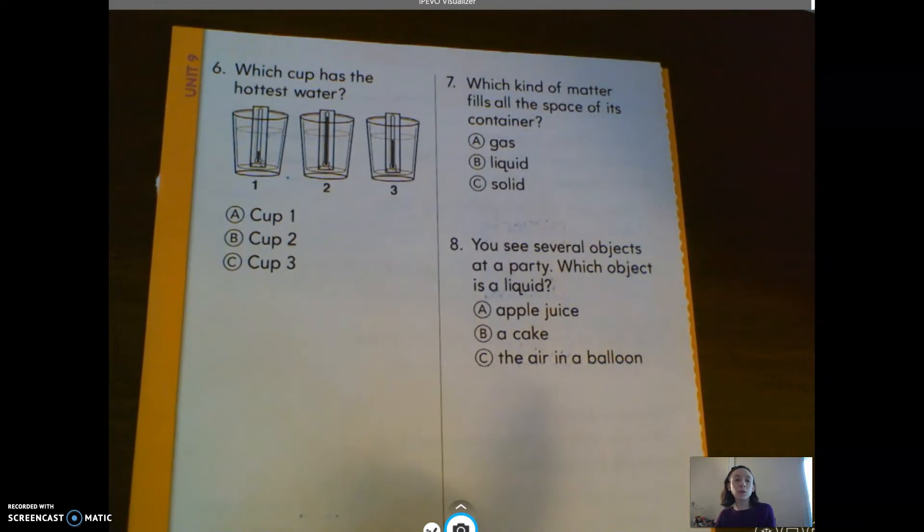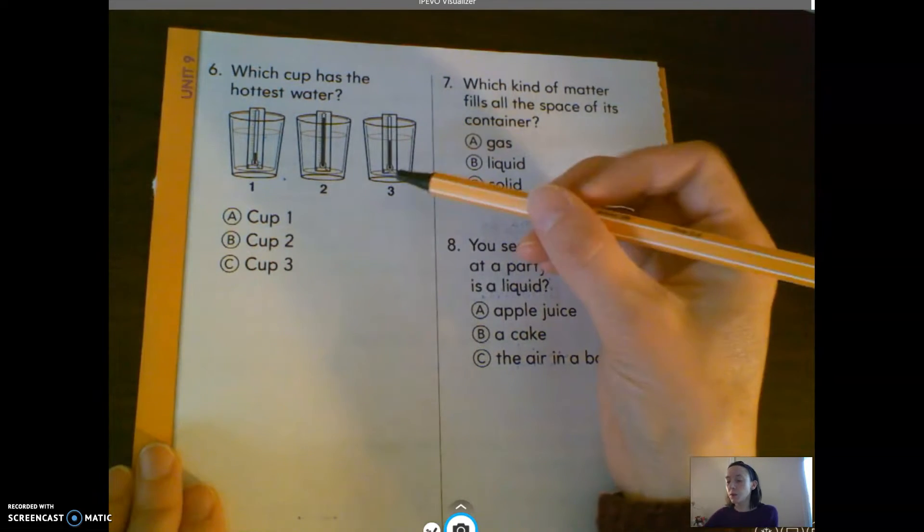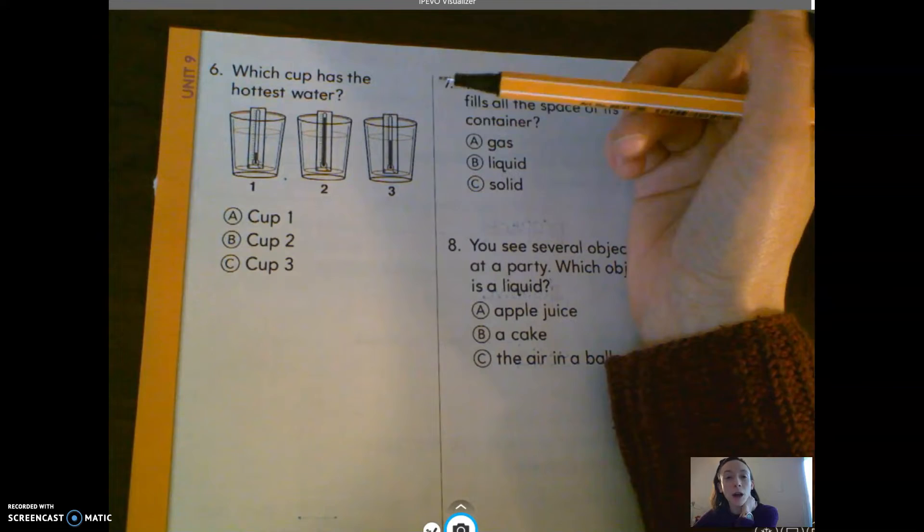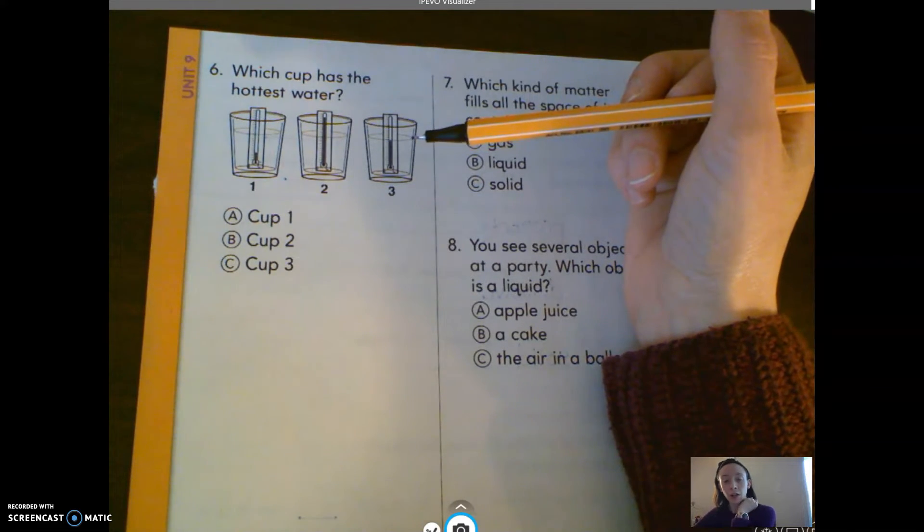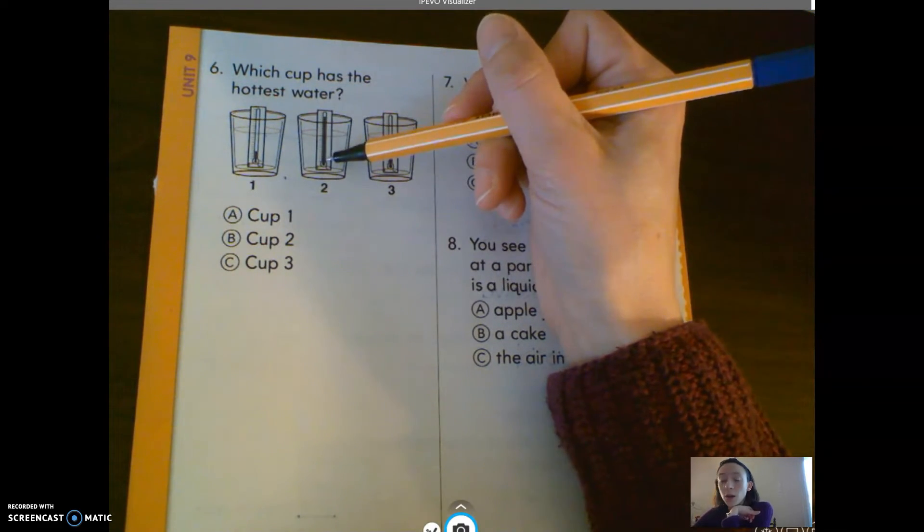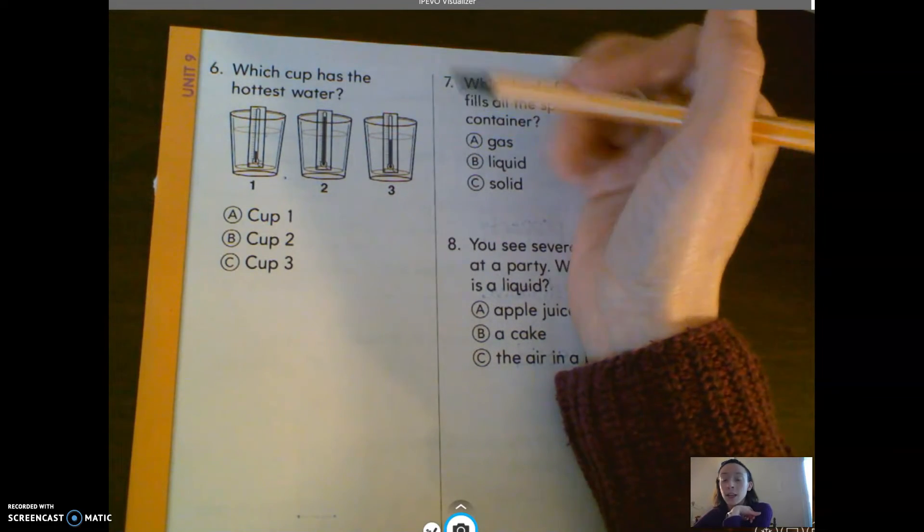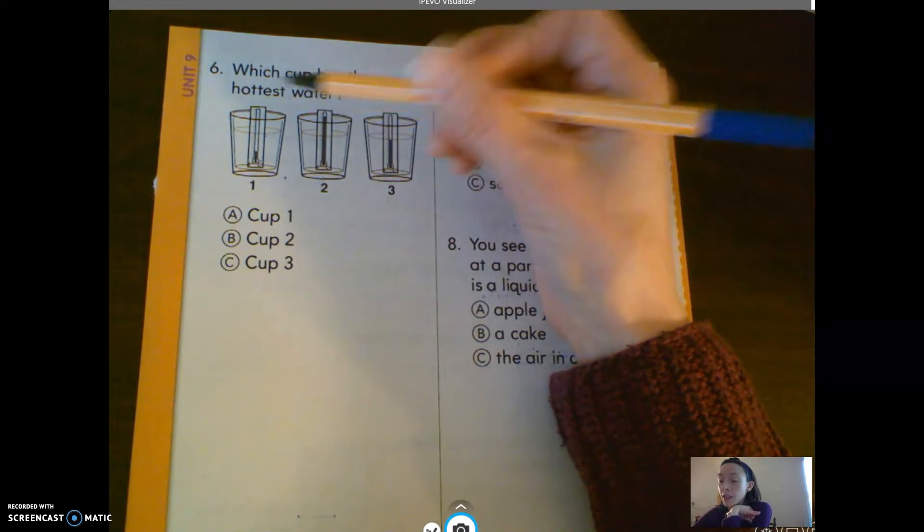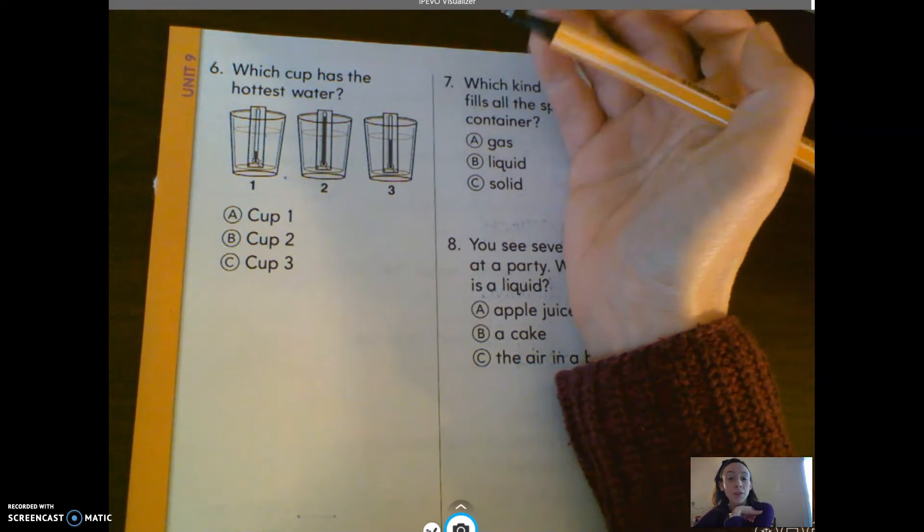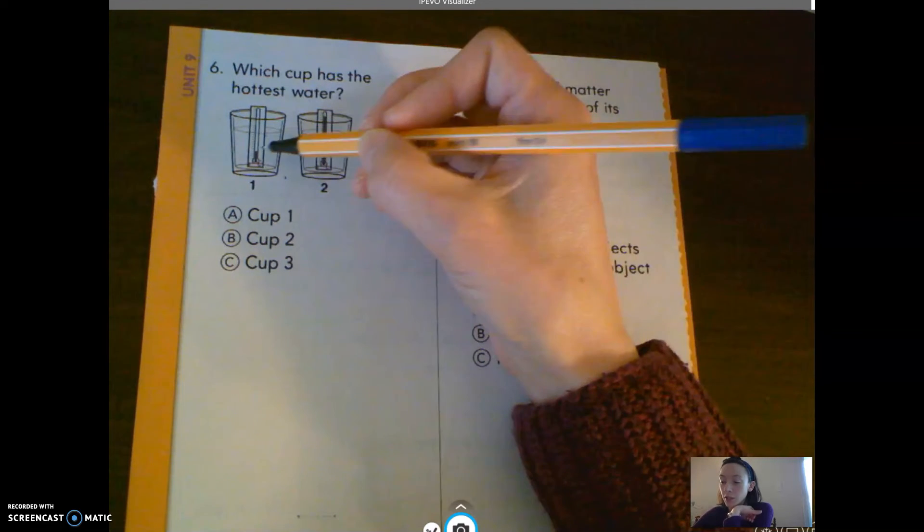Number six says, which cup has the hottest water? We actually didn't do this part in our book. We skipped it. But if you remember when we talked about temperature and using a thermometer, and when the thermometer, this red part, which I remember it's called mercury, is the highest, then that means that the temperature of the water is hotter.